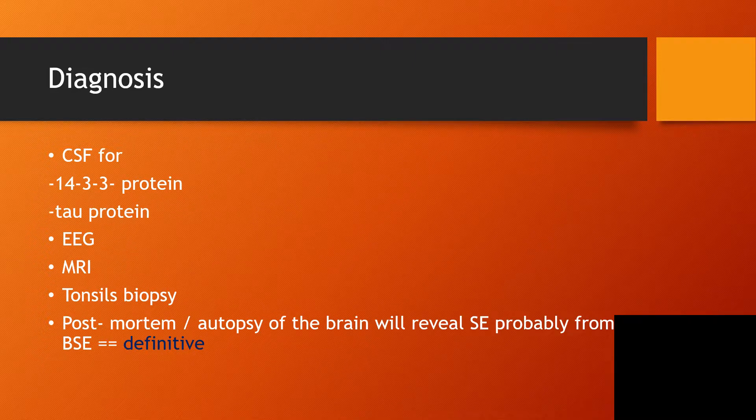How do we make a diagnosis of CJD? We ask the CSF for 14-3-3 protein and tau protein, and if they are positive, we go forward with an EEG (electroencephalogram), magnetic resonance imaging, and biopsy of the tonsil.